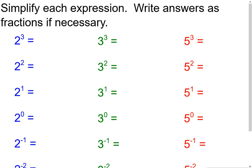Now let's remember how exponents work. 2 to the third is 8. 2 to the second is 4. 2 to the first is 2. Now, 2 to the zero — that's what I want you to think about. What do you think 2 to the zero actually equals?